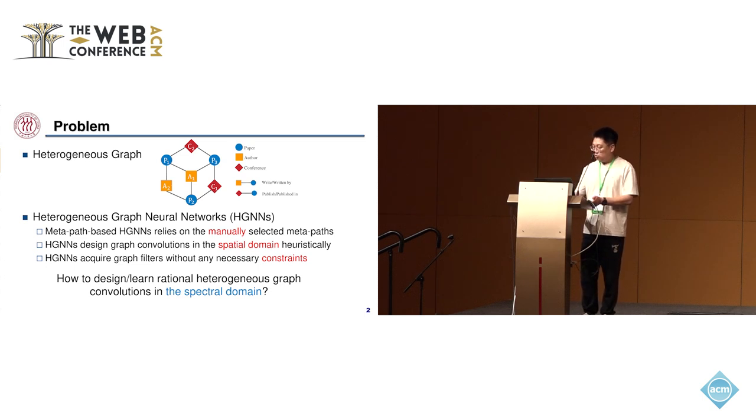Moreover, the design of aggregation strategies or graph convolutions by these HGNNs in the spatial domain is often heuristic, limiting their ability to learn arbitrary graph filters.